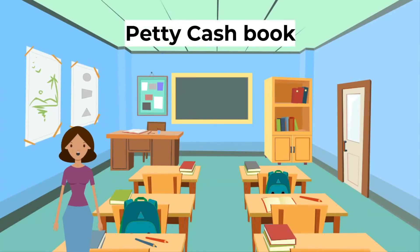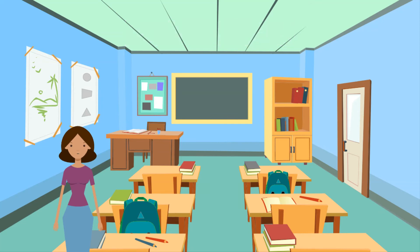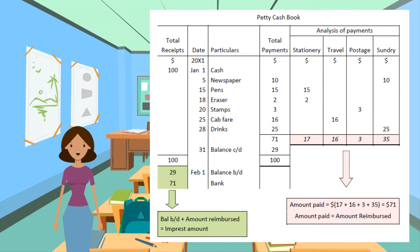Now let's look at the petty cash book. Petty cash is a small amount of cash kept in the office to pay for minor recurring expenditures. Petty cash books are used to record transactions involving petty cash funds. The imprest system maintains a fixed sum called the imprest amount or float, and the petty cash fund is reimbursed after making approved payments. Advantages include providing internal control and avoiding overcrowding of the cash book.